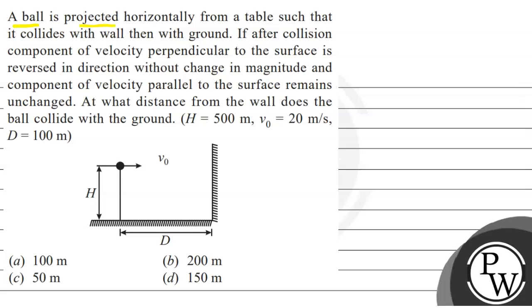A ball is projected horizontally from a table such that it collides with a wall, then with the ground. After the collision, the component of velocity perpendicular to the surface is reversed in direction without change in magnitude, and the component of velocity parallel to the surface remains unchanged. At what distance from the wall does the ball collide with the ground?